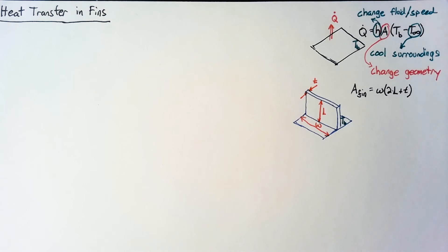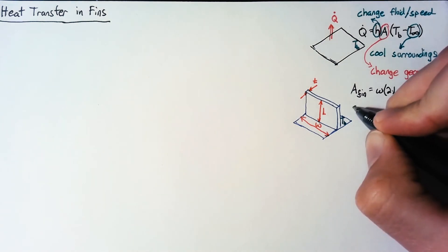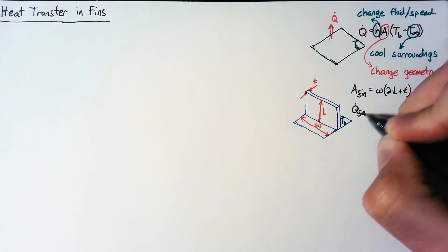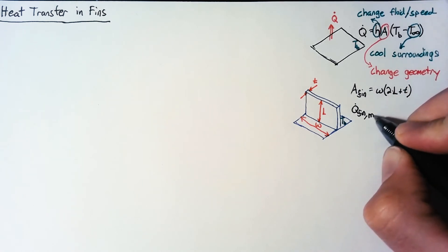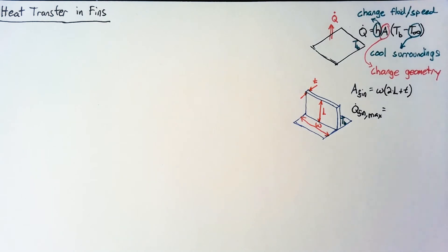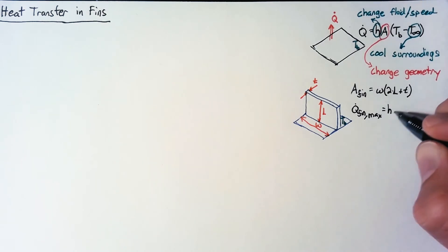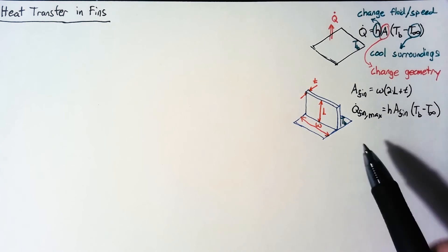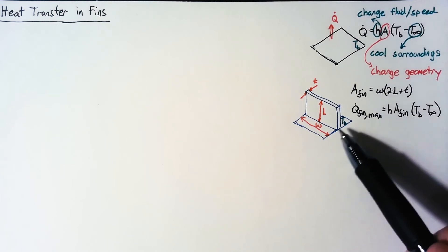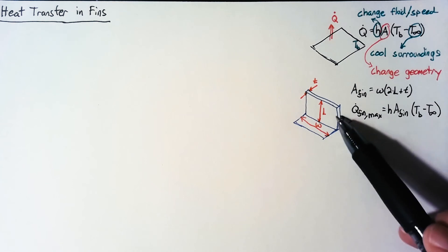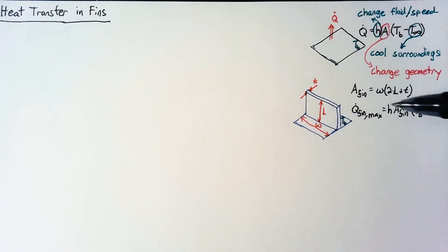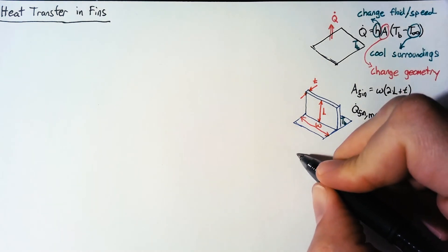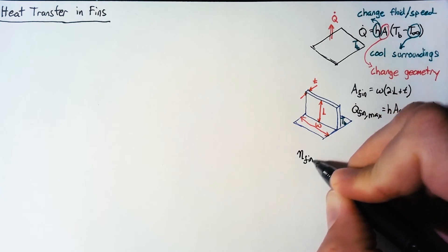Before we get to that, let's create a hypothetical maximum heat transfer rate for the geometry. This comes from the idea that even though area is changing, the base temperature is the same for the entire surface. This is the theoretical situation where the entire fin is at T_B — even though that's not real life — and it sets some maximum for us.